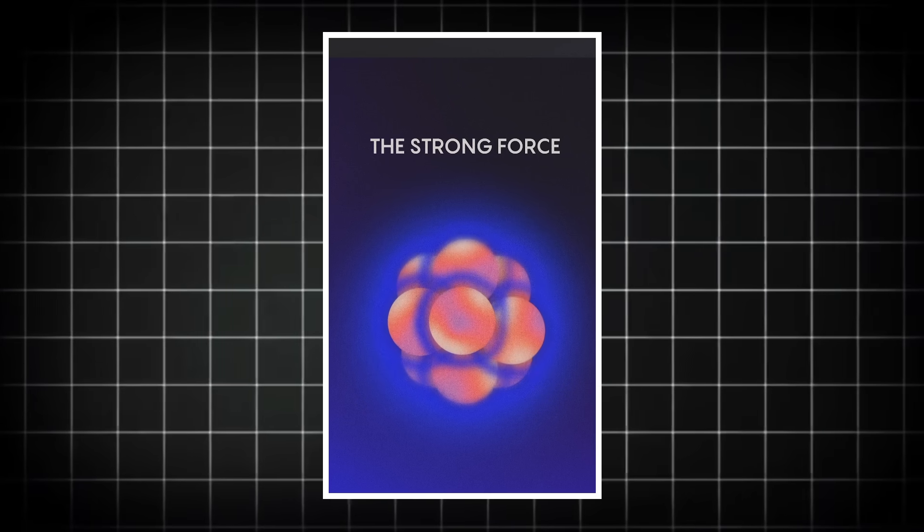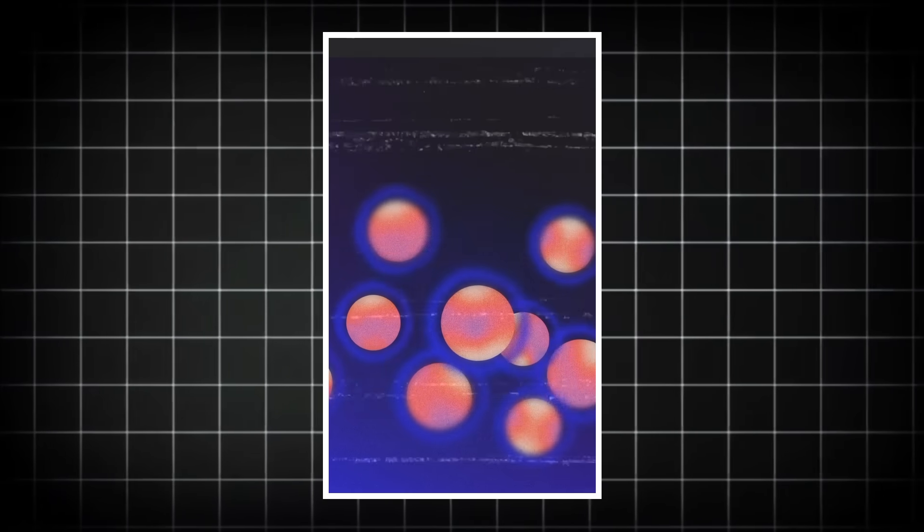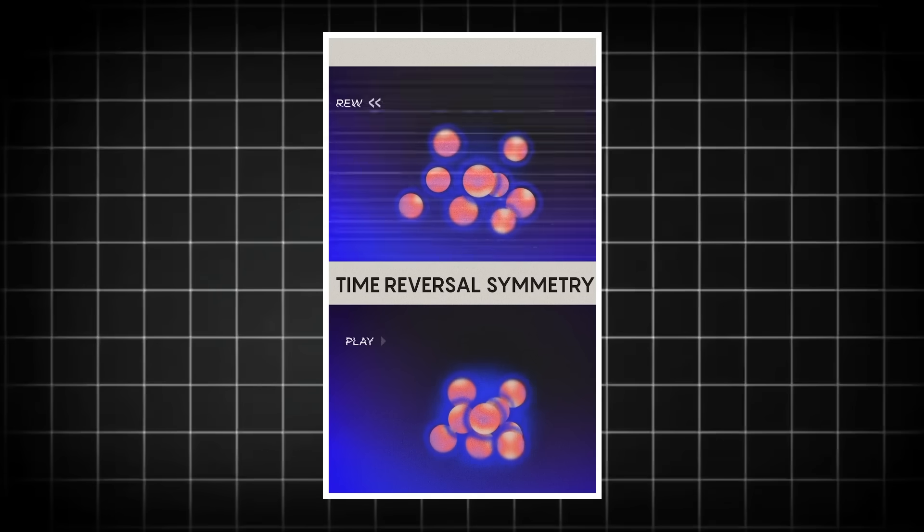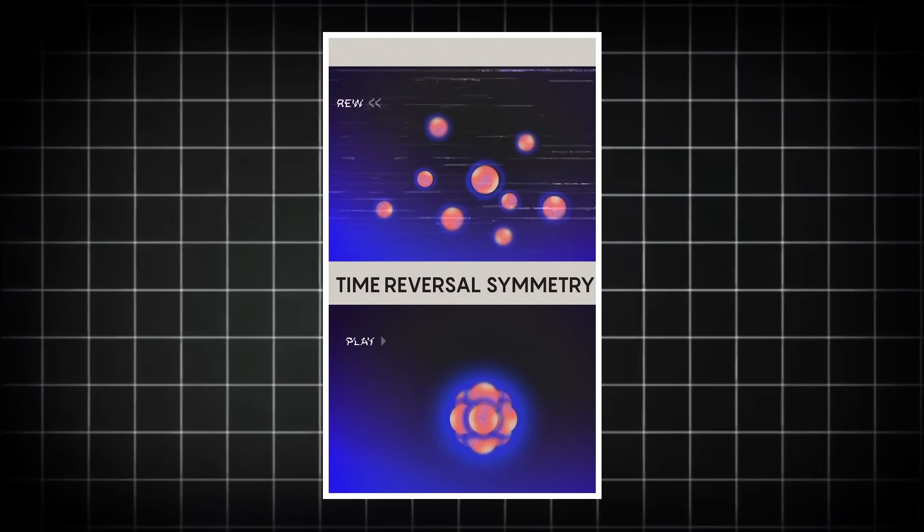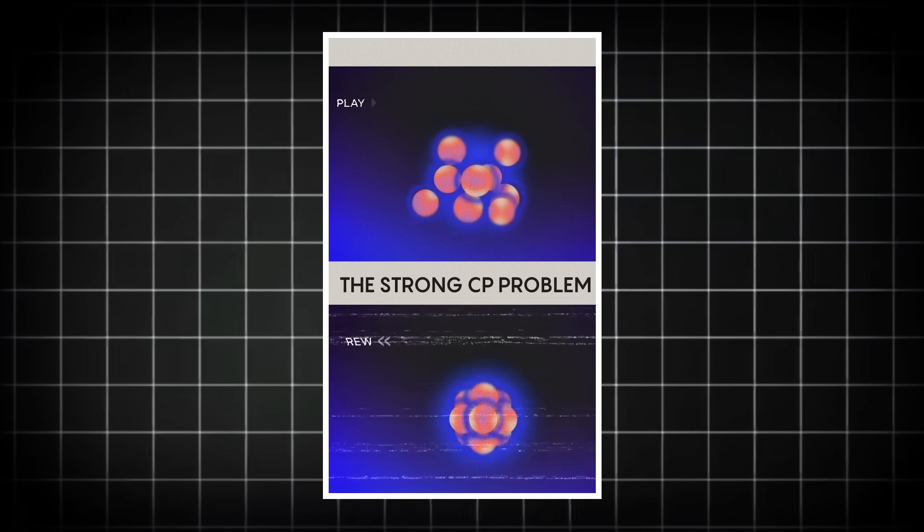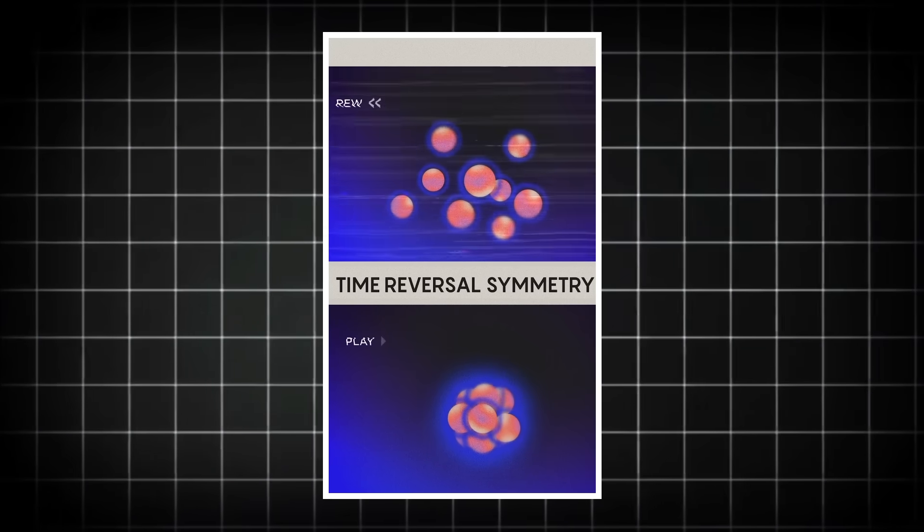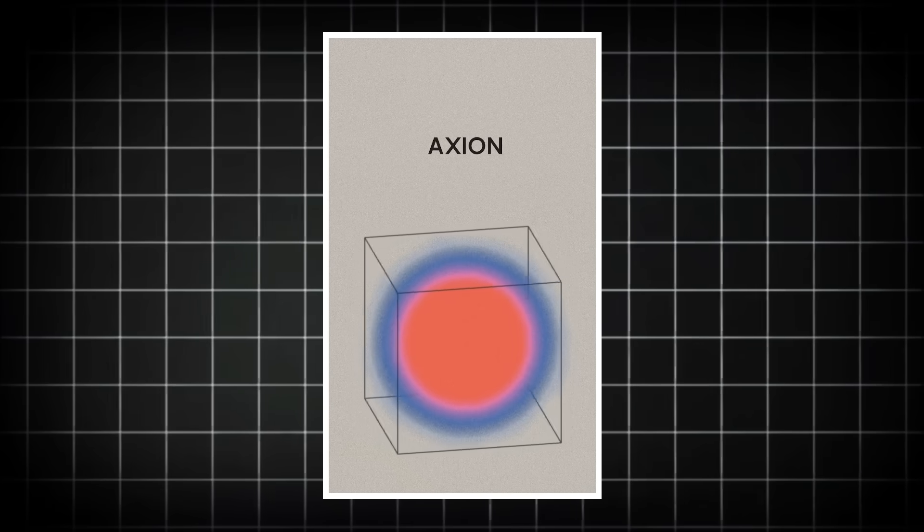Time reversal is a transformation where if you run the laws of nature backwards in time, they appear the same. And the strong force respects time reversal symmetry, even though one may not expect it to respect this symmetry. That's called the strong CP problem. It's as if there is a fundamental principle that forces the strong force to respect time reversal symmetry. And the axion was invented to explain this principle.